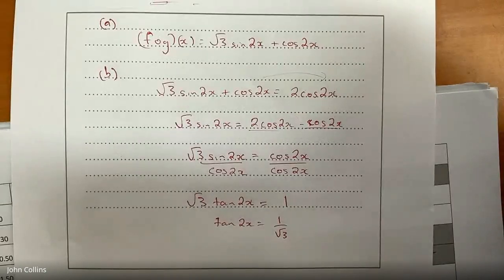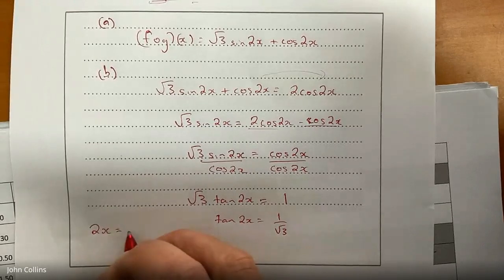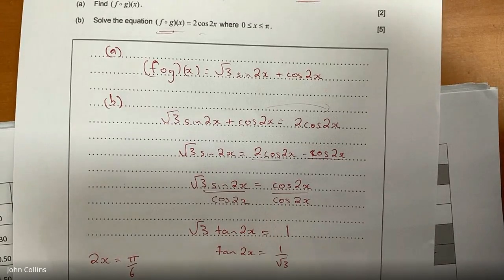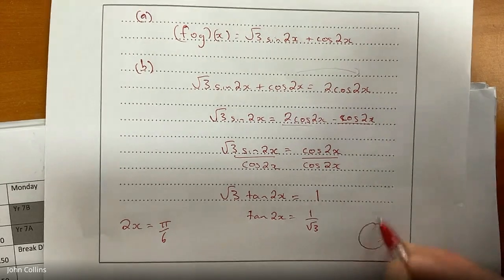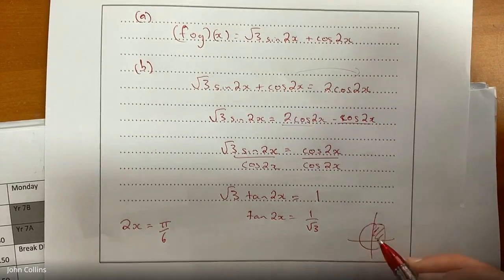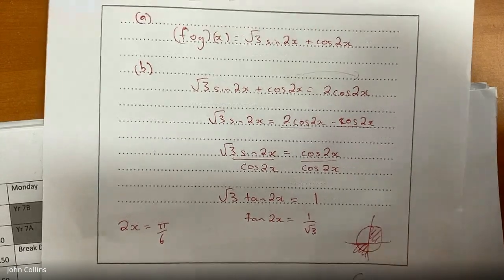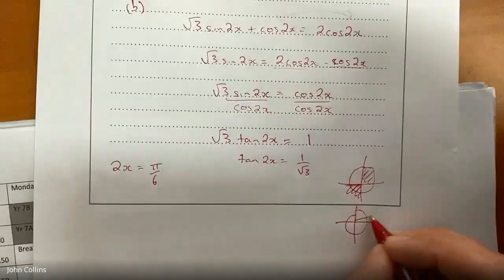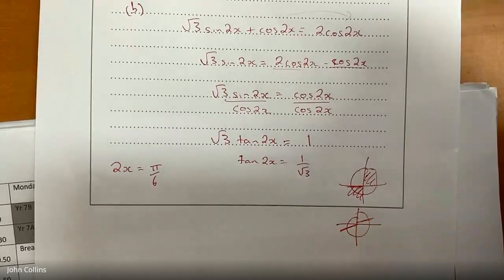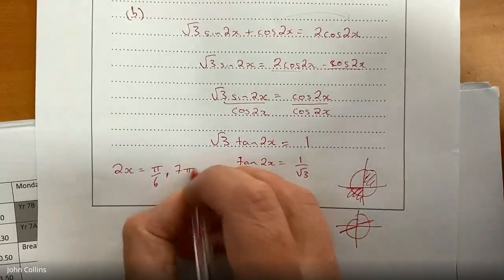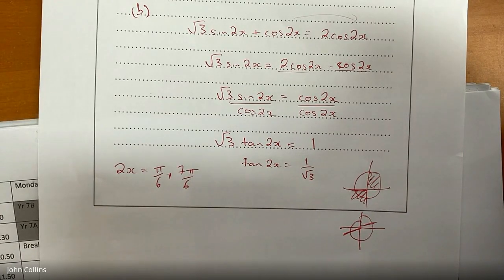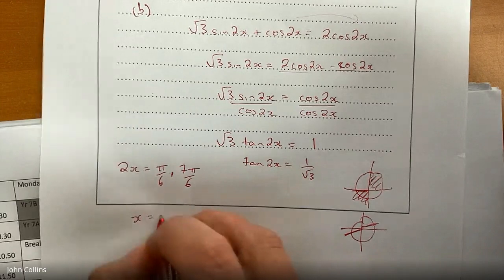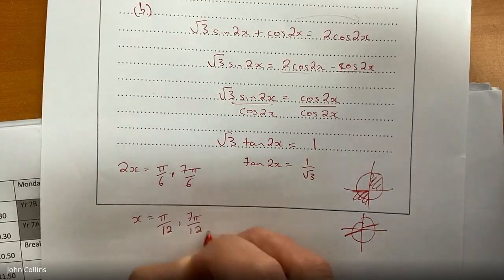Where else is tan positive? First and third quadrants. So 2x = π/6 and also 7π/6. Dividing by 2: x = π/12 and x = 7π/12.